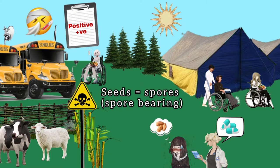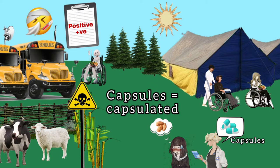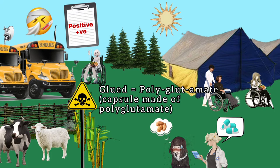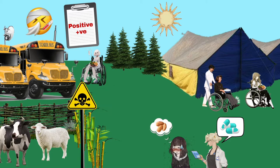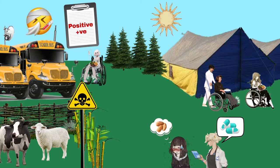The doctor is prescribing capsules to the patients. From the capsules, remember that Bacillus anthracis is a capsulated bacterium. Firstly, if you keep multiple capsules together, they stick to each other as if they are glued — remember the word 'glued' to recall that capsules are made up of polyglutamate. Additionally, the color of the capsules is somewhat fading — from 'fading,' remember that capsules demonstrate M fading reaction.